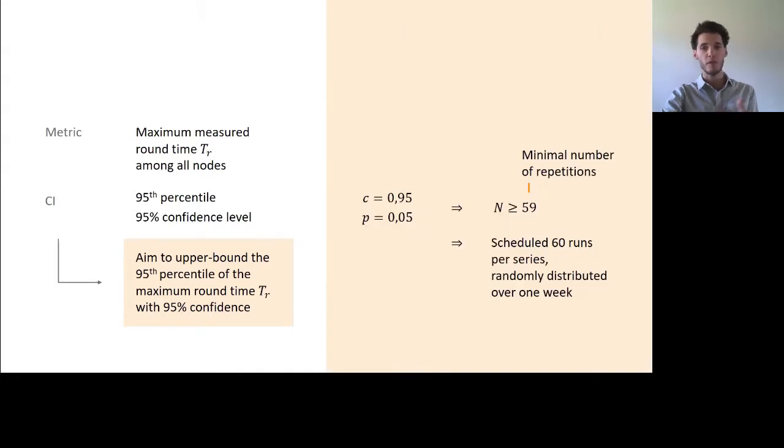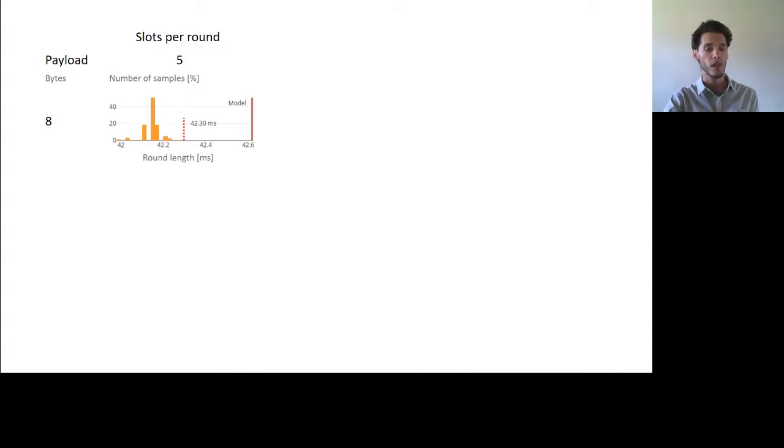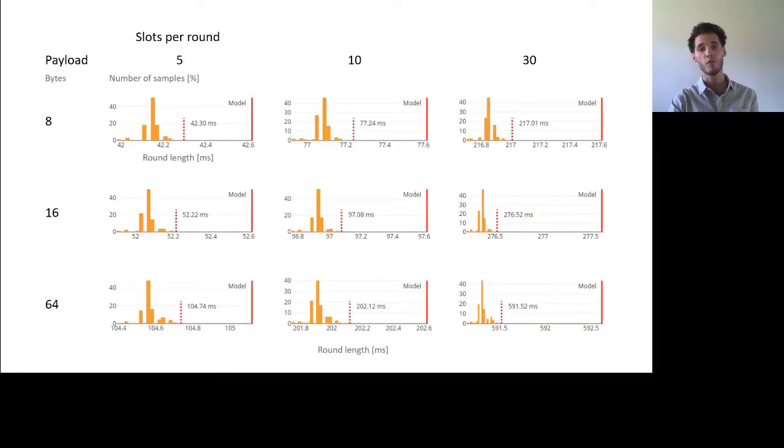So we've run the math and it gives us the number of experiments we need to run. We did that, and this is a sample of the experiment we've collected. You can see here the distribution of samples of measurements taken by all the nodes in the network. The dashed line represents the maximal value ever measured for the round by any node, and the solid line represents the model value. You can see two things. First, the model provides both a safe and reasonably tight upper bound for the maximal value ever measured. And naturally, this applies to a wide range of parameters, actually all the parameters we've tested.